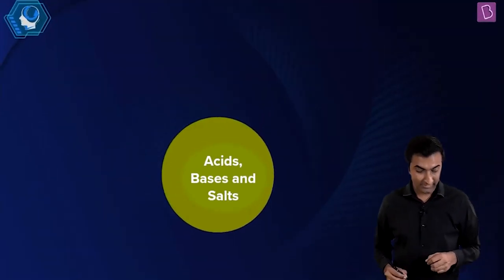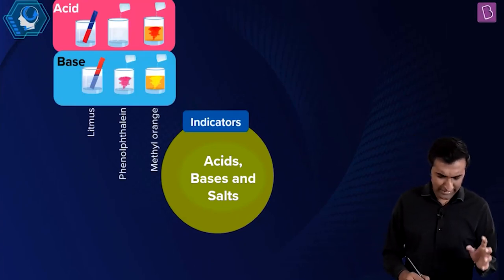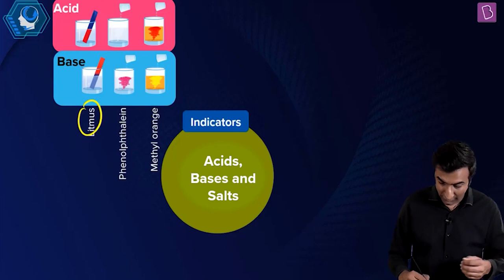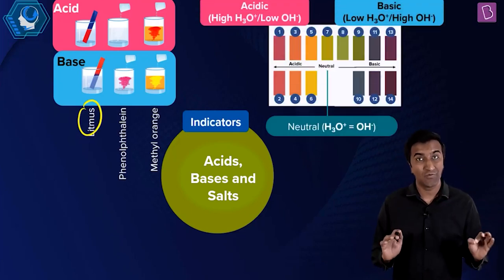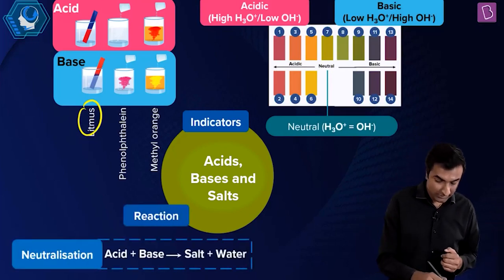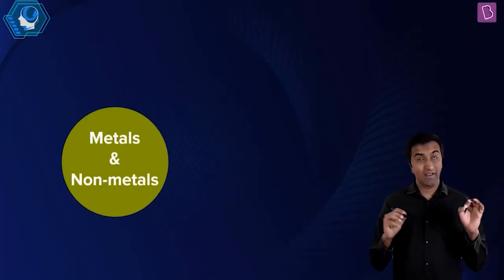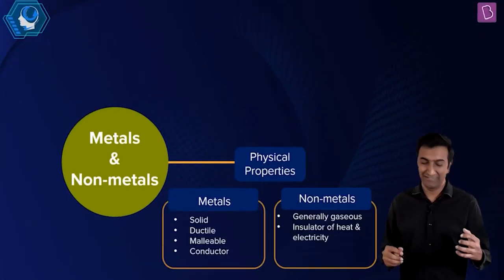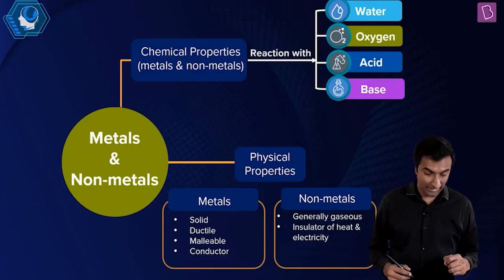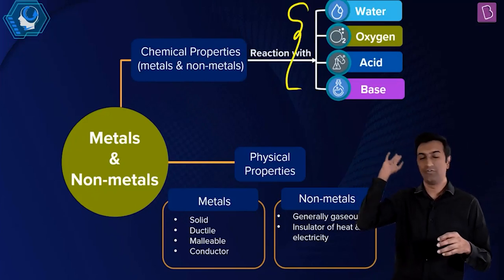Next chapter: acids, bases and salts — 28% weightage, very heavily tested. General idea of what is an acid, what is a base, the general tests like litmus, phenolphthalein, methyl orange, and so forth. The idea of pH and the fact that it's a log scale — extremely important. The idea of what is a neutral solution, and hence neutralization. For metals and non-metals: a lot of theory, but you can relate a lot of it to the periodic table. You study reactions with water, oxygen, and so on.